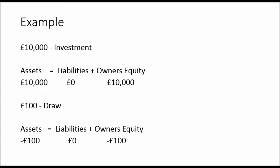Let's look at some examples. If we have a £10,000 investment, does that work in the accounting equation? Of course it does, because everything does if it's recorded properly. £10,000 will come from owner's equity and impact assets. We would debit the asset of £10,000 and credit owner's equity. So we have £10,000 equals zero plus £10,000 — they balance.